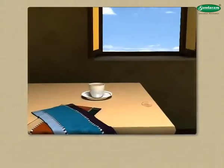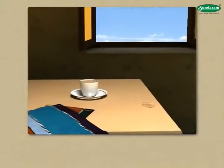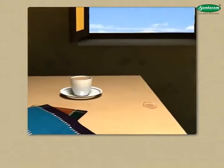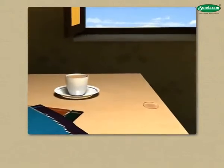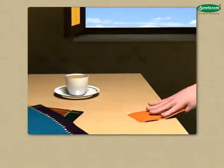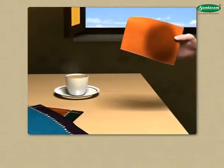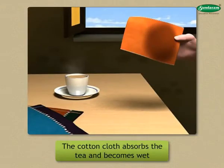Pour a few drops of tea on the table. Wipe it off with a cotton cloth. What change do you observe in the cotton cloth? The cotton cloth absorbs the tea and becomes wet.